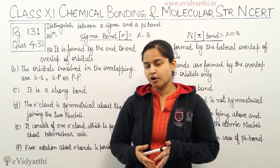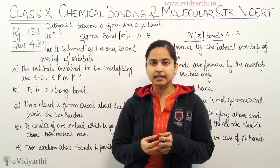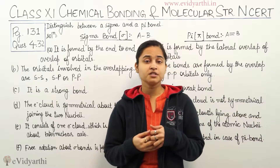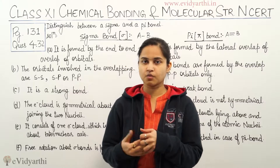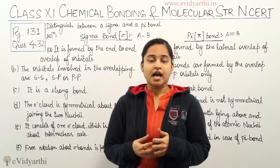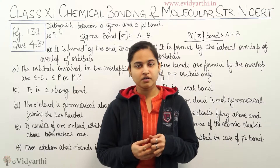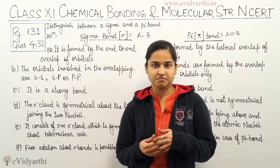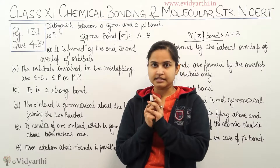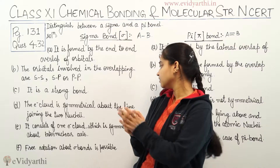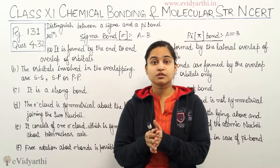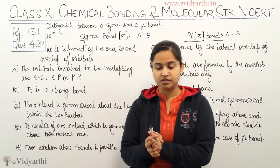Sigma bond is formed by the end-to-end overlap of the orbitals. The orbitals involved in this overlapping are SS, SP, or PP. Sigma bond is a very strong bond and also very symmetrical. The electron cloud in sigma bond is symmetrical about the line joining the two nuclei, and rotation is very free in sigma bonds.